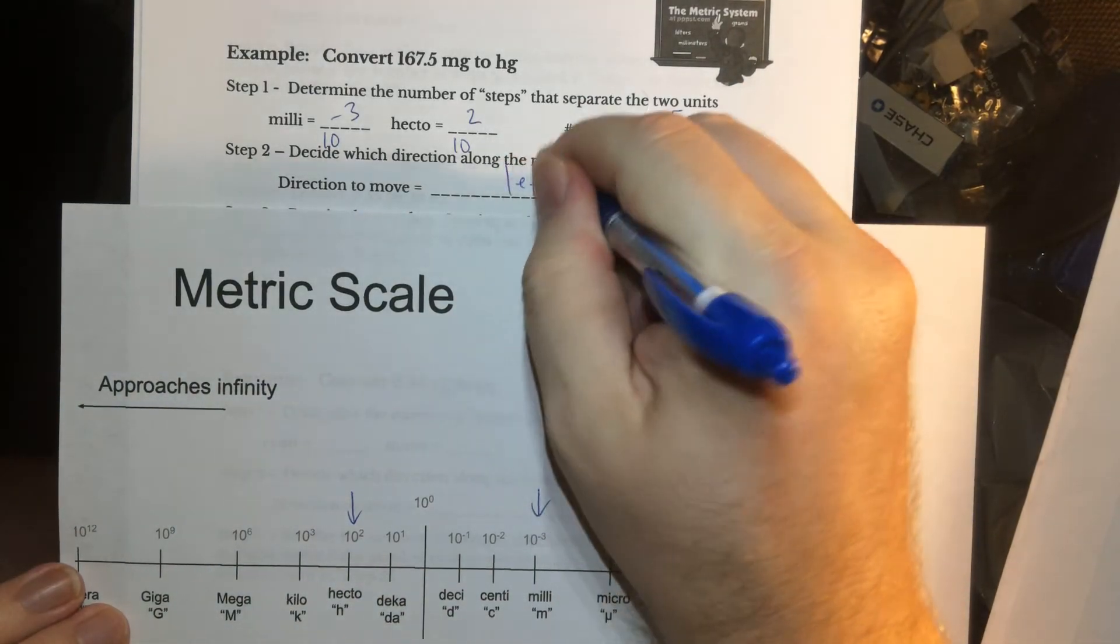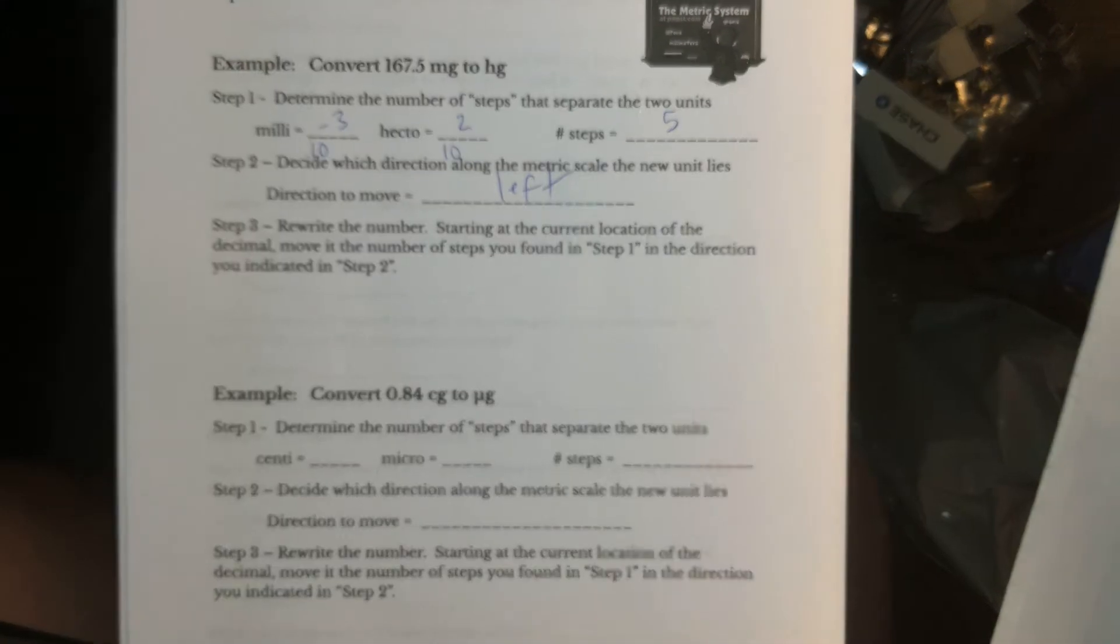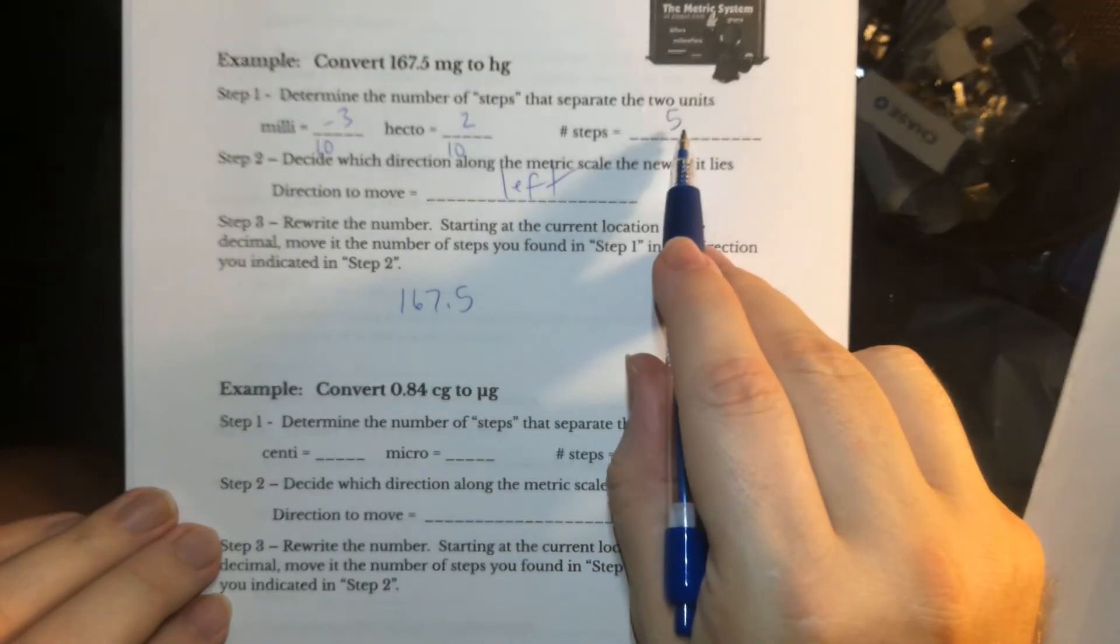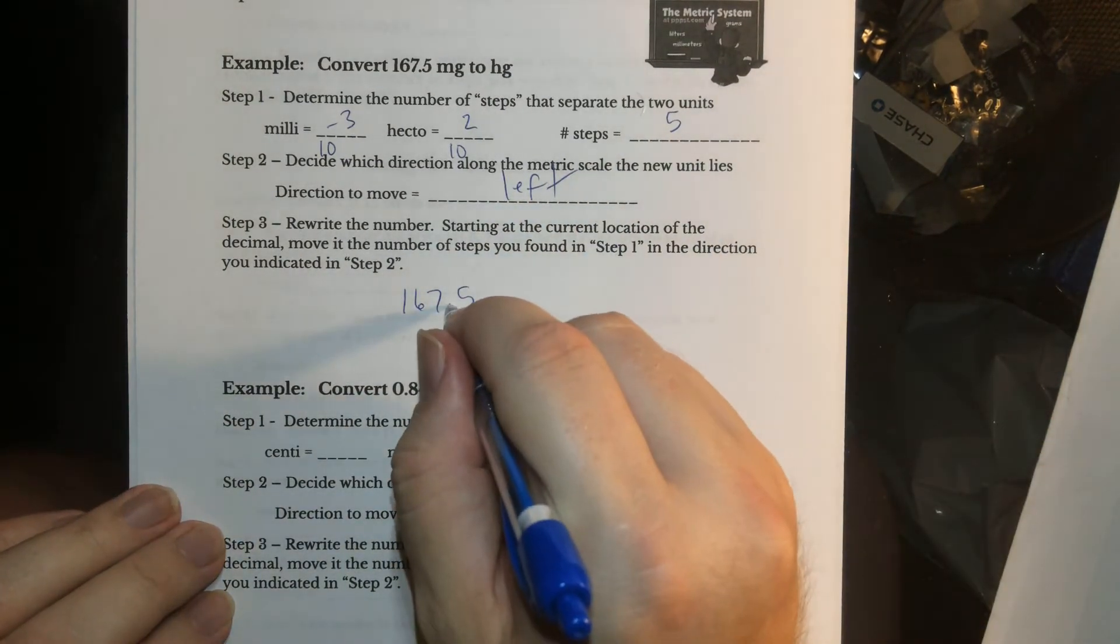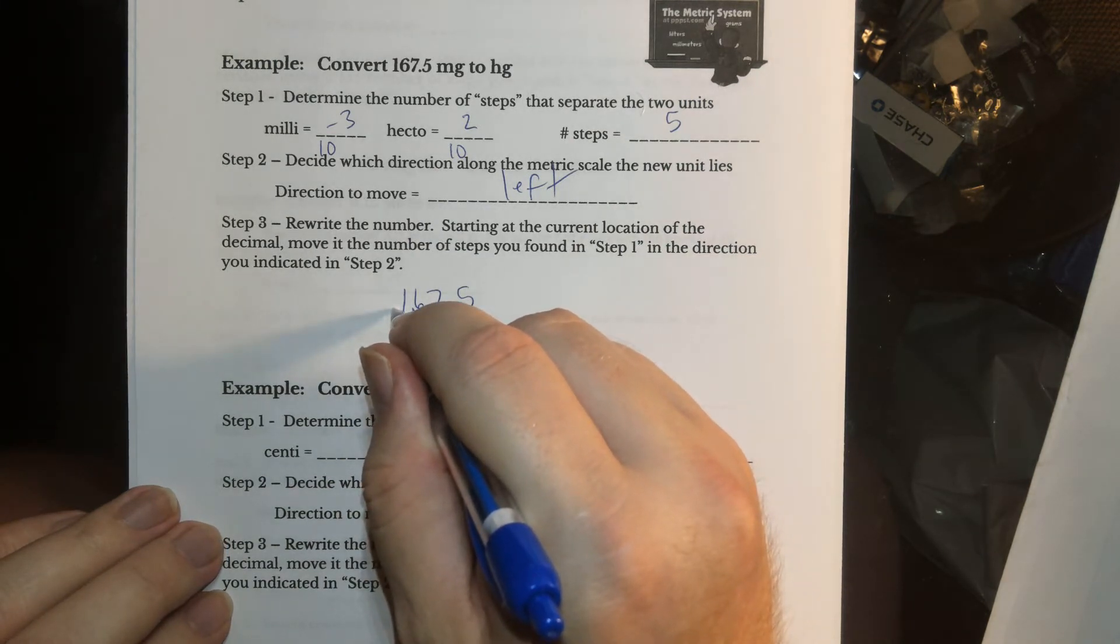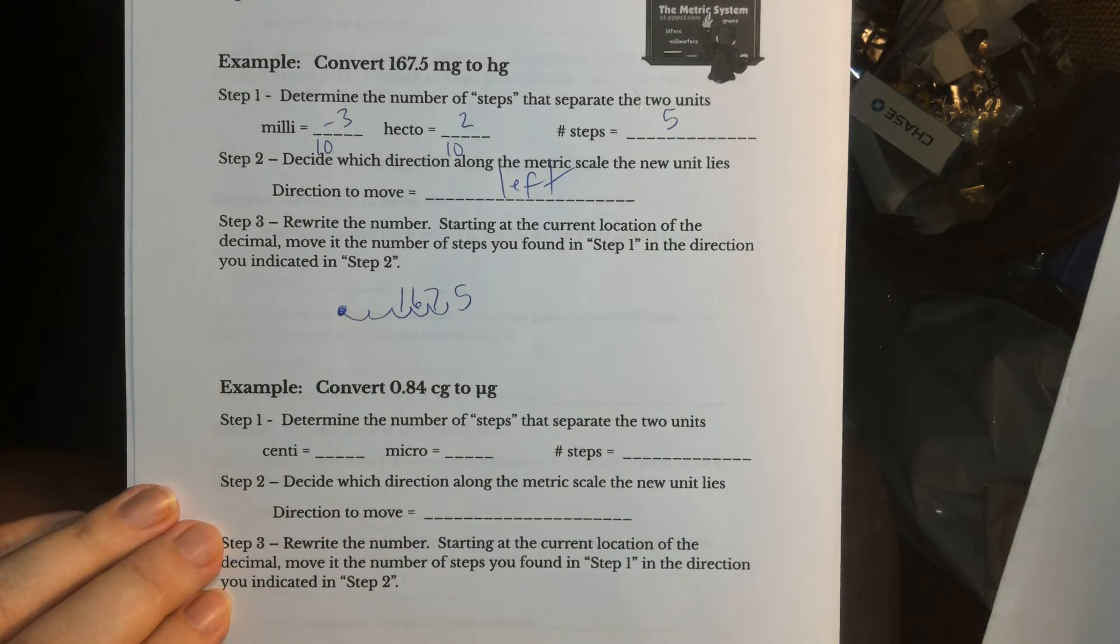So those are the two big questions. Now that we know that, we can simply write down the number we're trying to convert, 167.5, and go five places to the left. So move that decimal, 1, 2, 3, from wherever the decimal is. That's 3, 4, and 5. New decimal there.